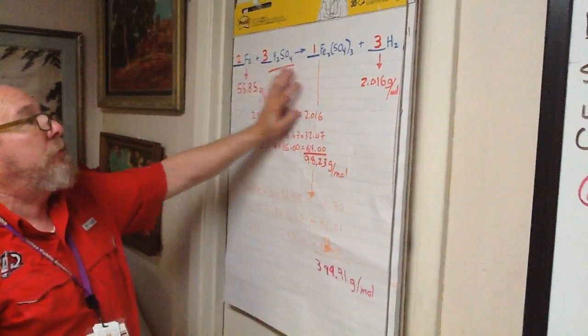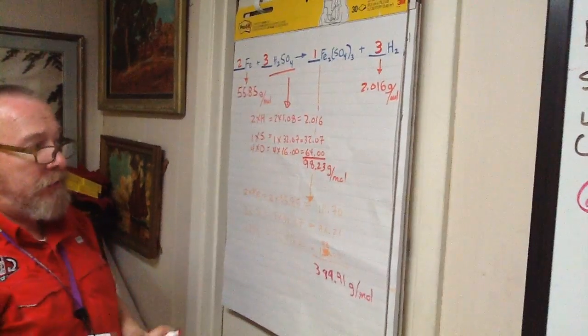So my coefficients are 2, 3, 1, and 3. Okay, so I've balanced my equation.